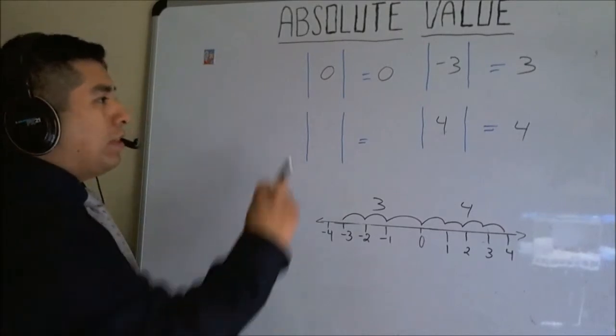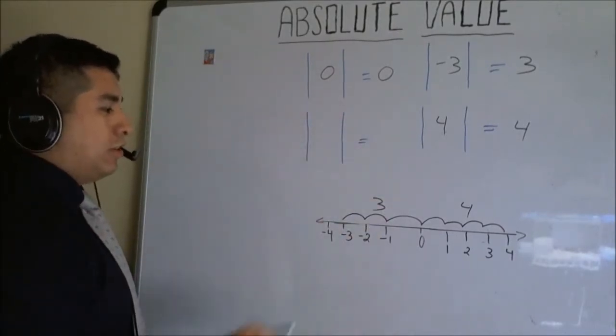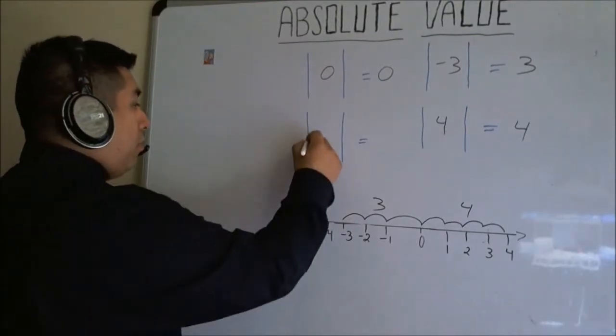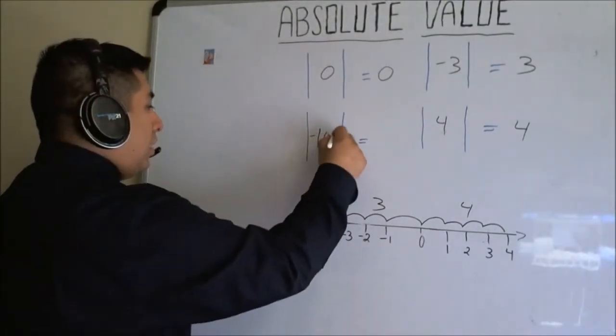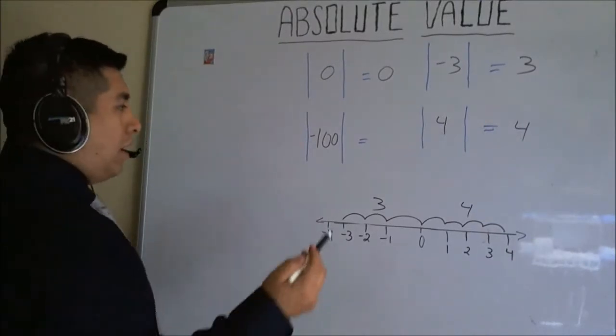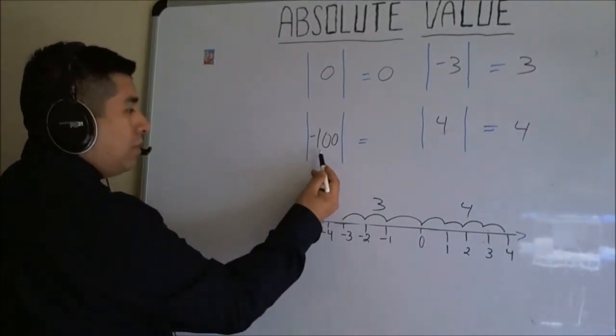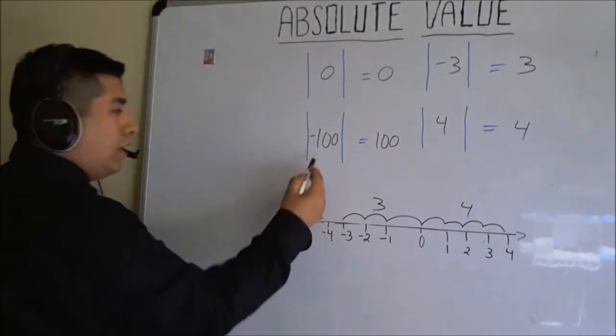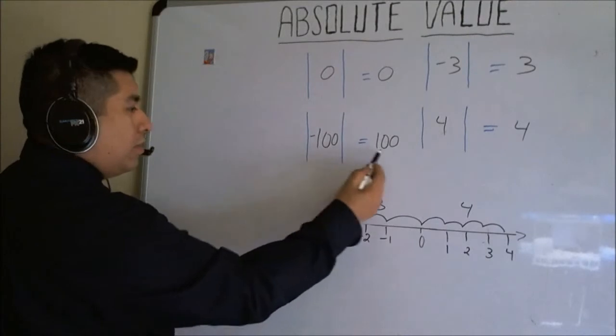Now, by knowing this and understanding this, you don't need a number line anymore to find what's the solution for much bigger numbers, such as negative 100. You can quickly say that the answer is the same number but positive. The absolute value of negative 100 is 100.